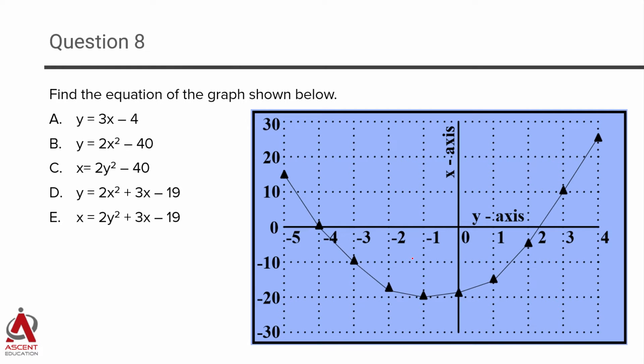When a graph is given to us and we have been given 5 answer choices each of which is an equation, what we need to find out is find the equation of the graph from the data that is given. One of the quick things that I would like you to observe at this point is usually the horizontal axis is your x axis and the vertical axis is the y axis. In this question, they swapped the two axes. Keep this in mind.